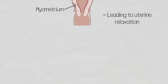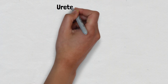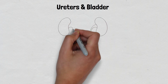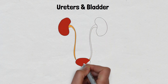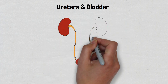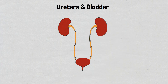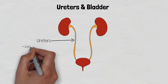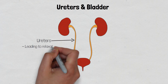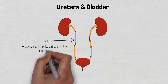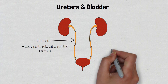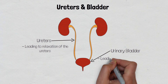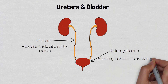There are beta-2 receptors within the ureters, which, when stimulated, cause relaxation of the smooth muscle, thus reducing urine entering the bladder. There are also receptors within the bladder itself, which cause bladder relaxation to prevent the excretion of urine.